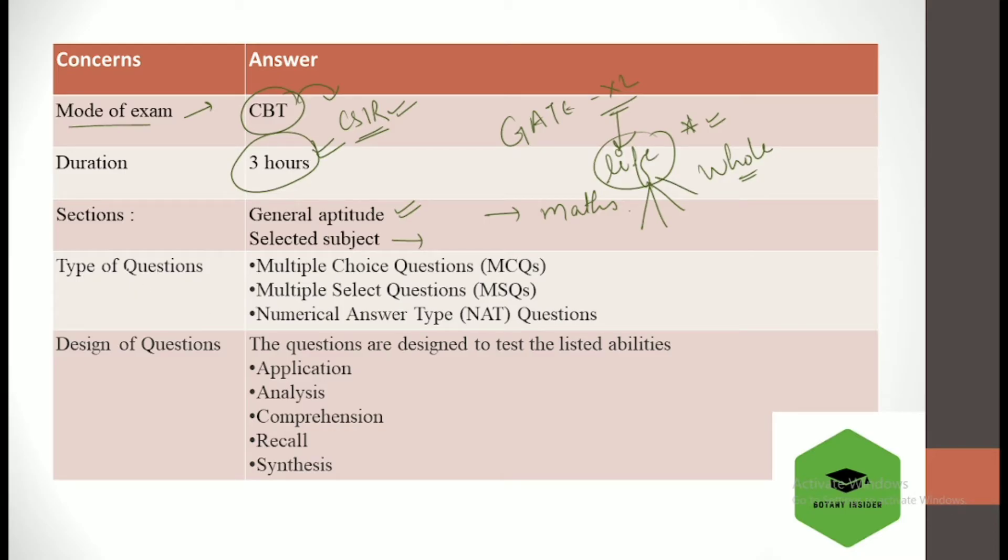Then talking about the type of questions. In case of CSIR we have only the MCQ type of questions, but when we look into the GATE exam there are majorly three types of questions. The first one are the multiple choice questions, the second one are the multiple select questions, and the third one are the numerical answer type questions, that is NAT.